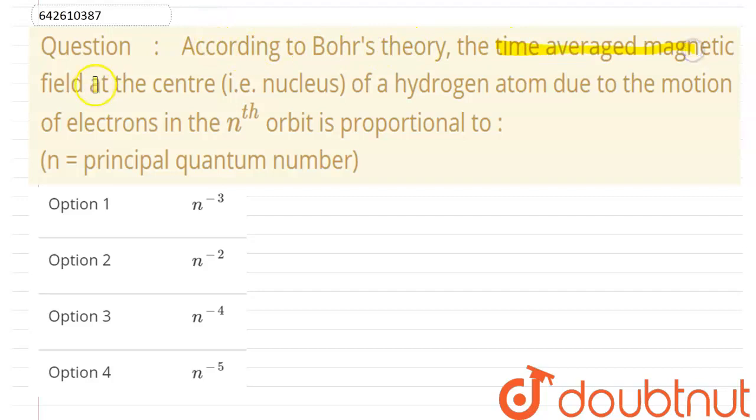the time-averaged magnetic field at the center of a hydrogen atom due to the motion of electron in nth orbit is proportional to? If I talk about electron revolving in a circle, because of the revolution, a current will generate.